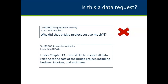How about this second version? "Under Chapter 13, I would like to inspect all data relating to the cost of the bridge project, including budgets, invoices, and estimates." Yes — this is a request and the entity would need to respond. It is addressed to the responsible authority, it references Chapter 13, it asks to inspect, and it identifies the data. It does not identify which bridge project, and that would probably be something the responsible authority would want to clarify before responding.